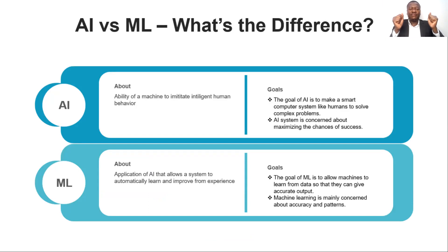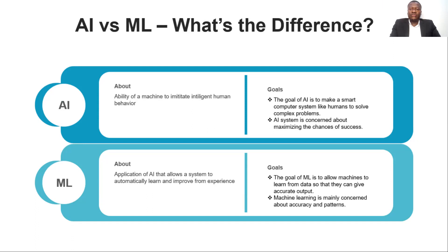You'll probably be asking yourself: what are the main differences? Simply put, AI is the ability of a machine to imitate intelligent human behavior. The main goal of AI is to make a smart computer system — like humans — to solve complex problems. Things can be done much smarter and quicker now using computer systems. AI is more concerned about maximizing the chances of success rather than taking more risk.